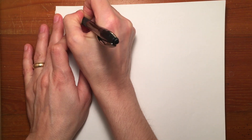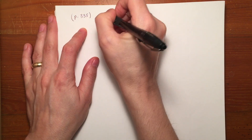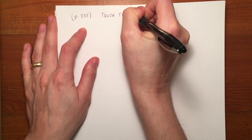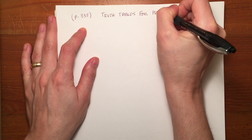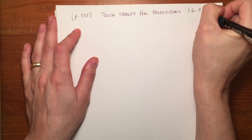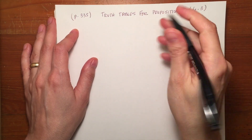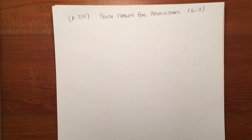So here we're on page 335, and we're looking at truth tables for propositions. This is section 6.3 in your textbook, and I'll also be referring to some information in section 6.2 when we talk about the truth functions of the logical operators.